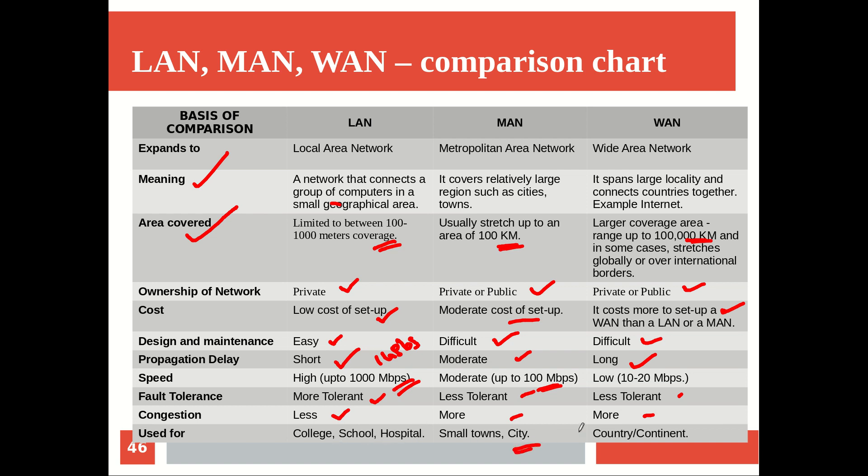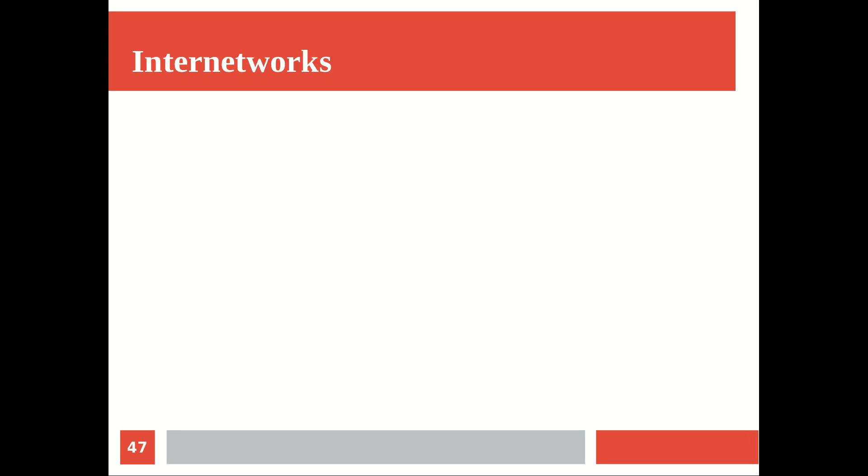In terms of where each is used: LAN is used in colleges, schools, hospitals - within a building; MAN covers small towns and cities; and WAN covers countries or continents. This comparison chart is provided for exam writing purposes. In detail, we saw what local area, metropolitan, and wide area networks are, including the protocols for wired and wireless variations. Now the very last concept of this category is the inter-network.